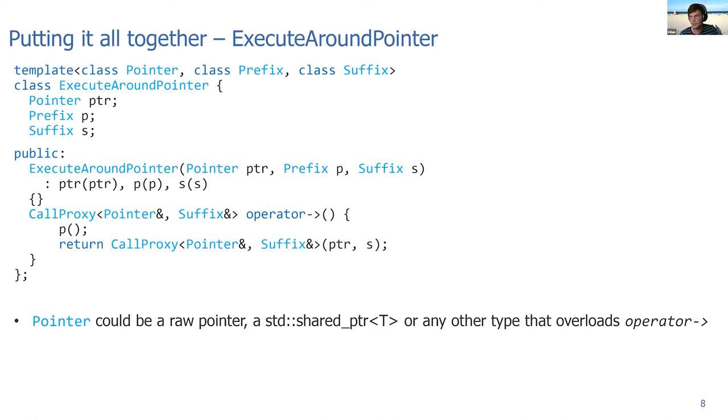Now we're going to put that together to build the class ExecuteAroundPointer. It's a class template. As first argument, we get the pointer that we are executing around. The second template argument is the prefix action that we want to execute, and the third argument is the suffix action. We store a pointer ptr, the prefix action P, and the suffix action S. You can construct an ExecuteAroundPointer from a pointer, a prefix action, and a suffix action. This is not about perfect forwarding, it's just that we want to keep it simple on that slide.